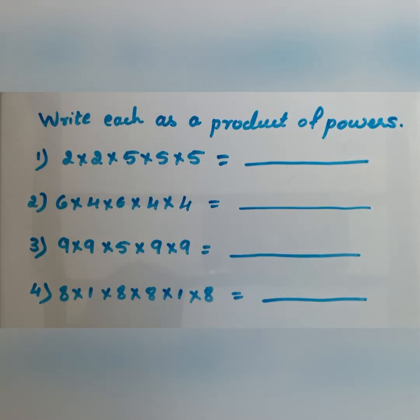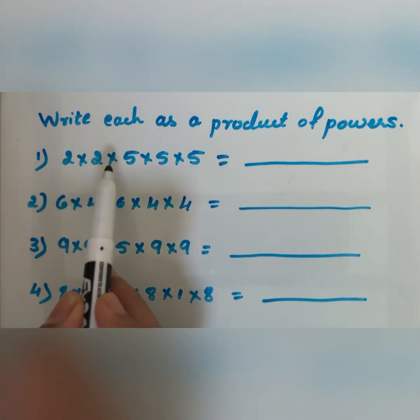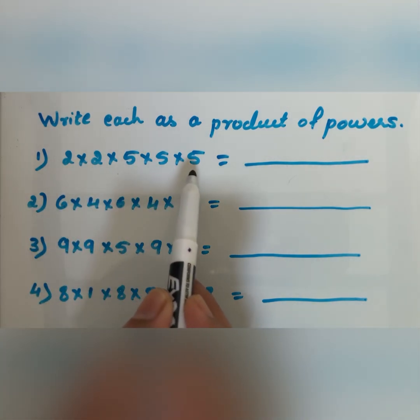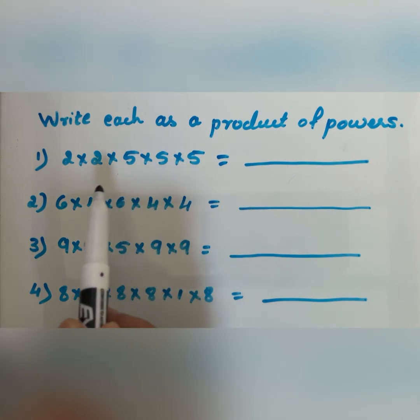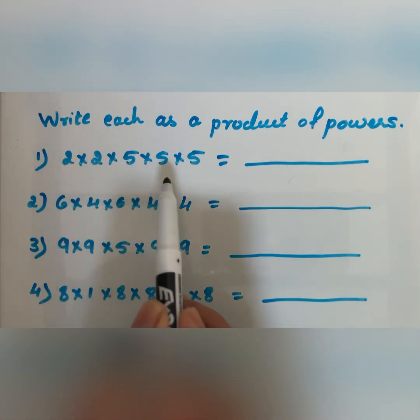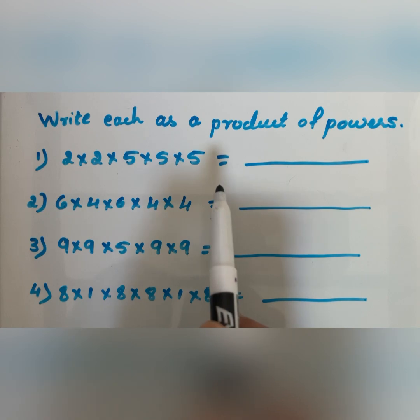Write each as a product of powers. First question: 2 times 2 times 5 times 5 times 5. We have to write this as a product of powers.